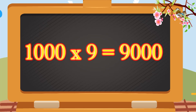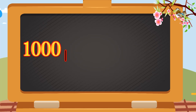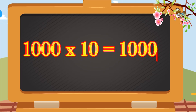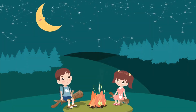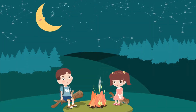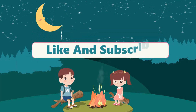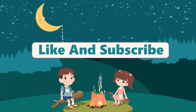Thousand nines are nine thousand. Thousand tens are ten thousand. Thousand tens are ten thousand. Please like and subscribe. Thank you.